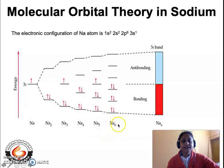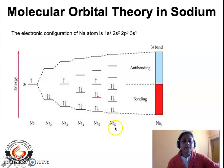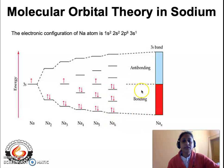In the case of six atoms of sodium combining to give rise to a Na6 molecule, since it is an even number of atoms, there are no non-bonding molecular orbitals. The six 3s atomic orbitals overlap to give rise to six molecular orbitals — three bonding and three antibonding. The six valence electrons are placed only in the bonding molecular orbitals, two electrons each, while the antibonding molecular orbitals remain vacant.